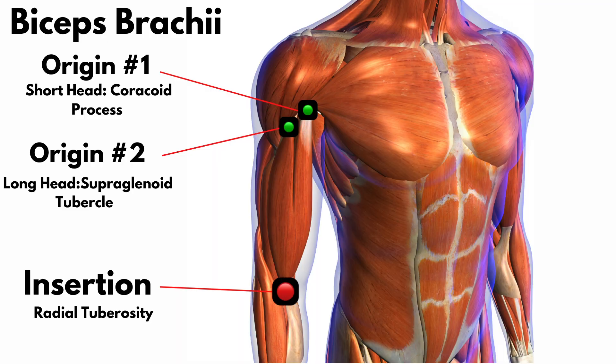You can see with this example of the biceps brachii — you're gonna have two points of origin. You're gonna have the short head originating at the coracoid process, then the long head originating at the supraglenoid tubercle, and there's gonna be an insertion point at the radial tuberosity. The more that you study muscle anatomy, the more you're gonna notice that a lot of these origin and insertion points are on bony landmarks.